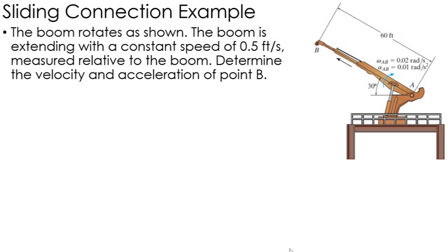In this problem, I have a boom that rotates with an angular velocity of 0.02 radians per second and 0.01 radians per second squared acceleration. The boom also can extend with a velocity of 0.5 feet per second. It does that at a constant speed, relative to the boom.